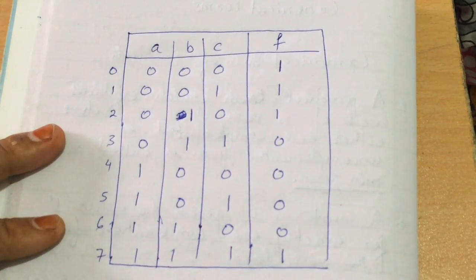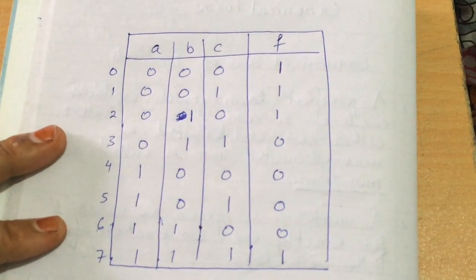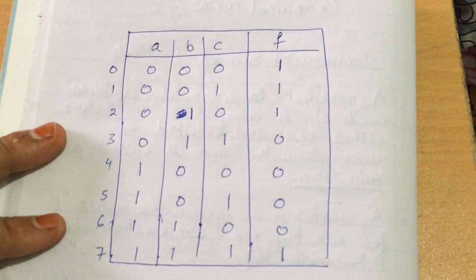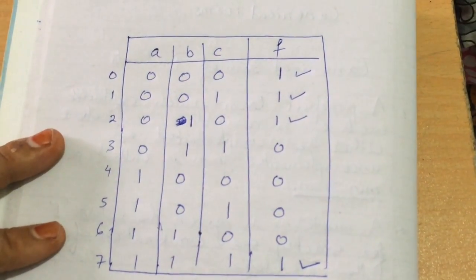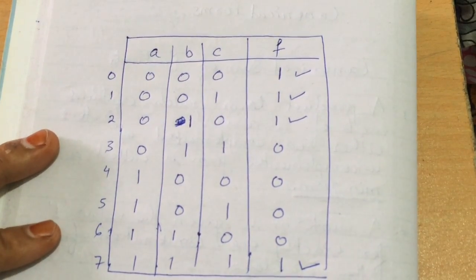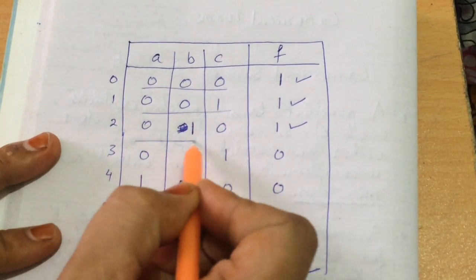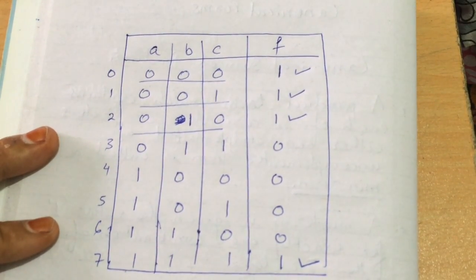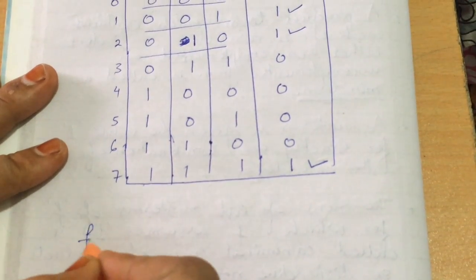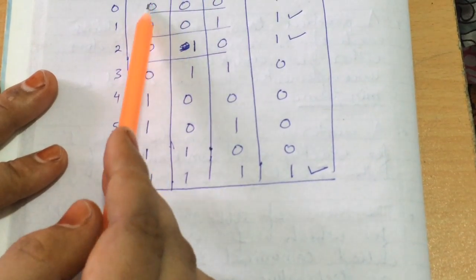To find the min terms and to write this function in terms of sum of min terms, we look only at the values which have 1 in the f column. We can see that rows 0, 1, 2, and 7 have the value 1.